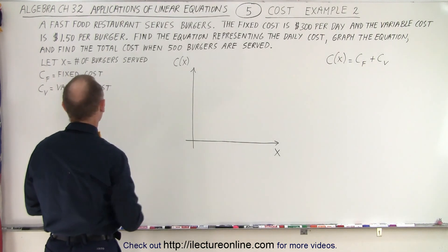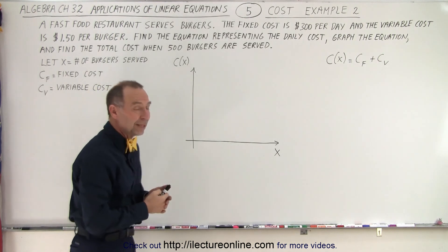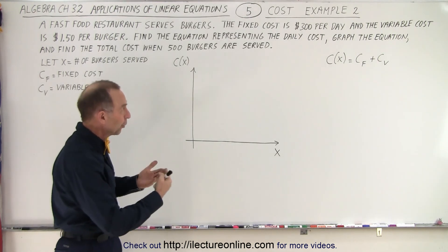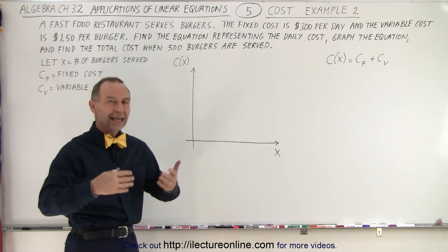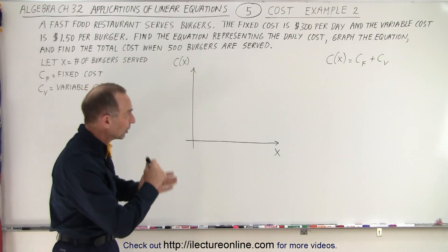Here we have a small fast food restaurant that serves burgers and the fixed cost is $300 per day for the rent, the employees' wages, the electricity, the gas, all the utilities, the water, everything else you have to pay for on a daily basis.